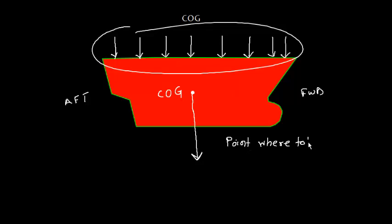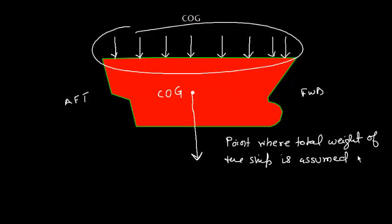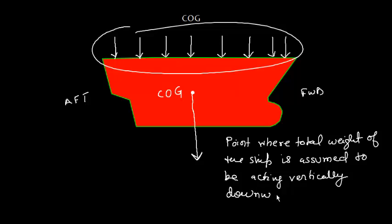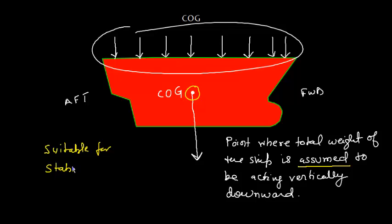The center of gravity is the point where the total weight of the ship is assumed to be acting vertically downward. It is very interesting that this is an assumption — that means this point is an imaginary point. We choose this imaginary point because it is suitable for stability purposes or stability calculations.